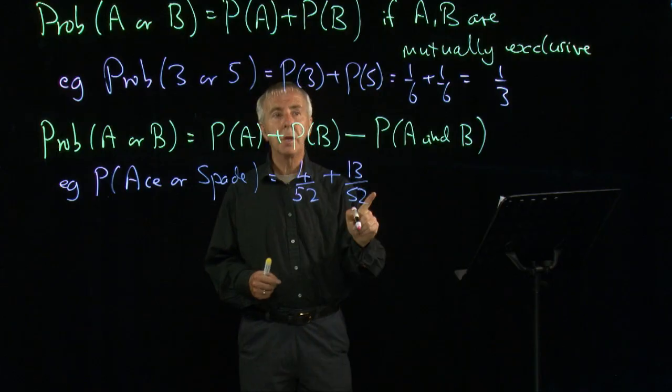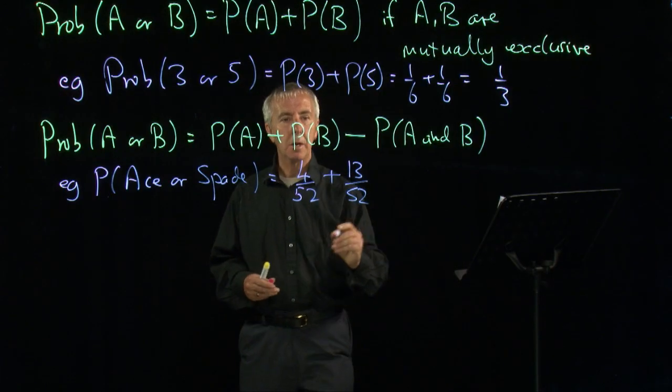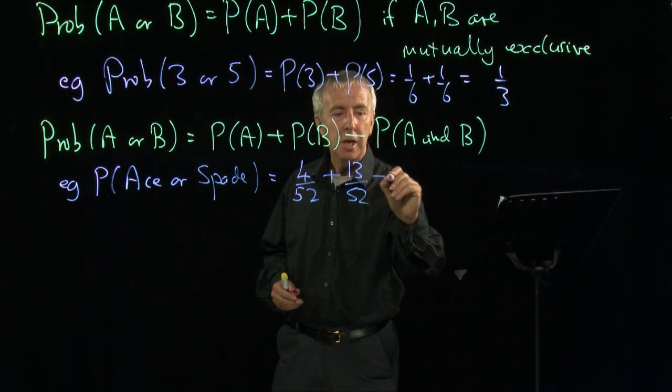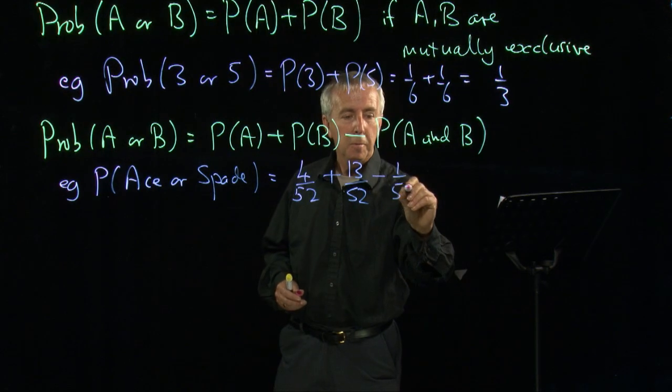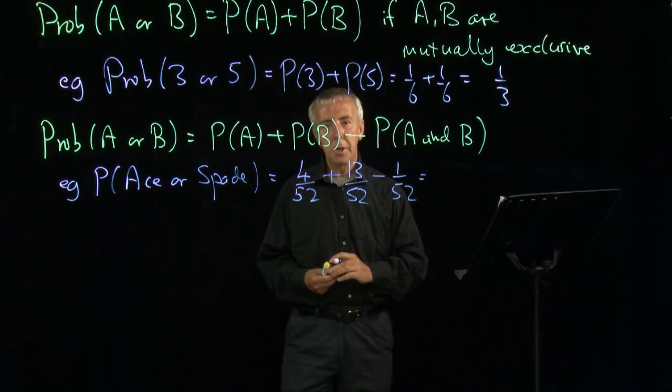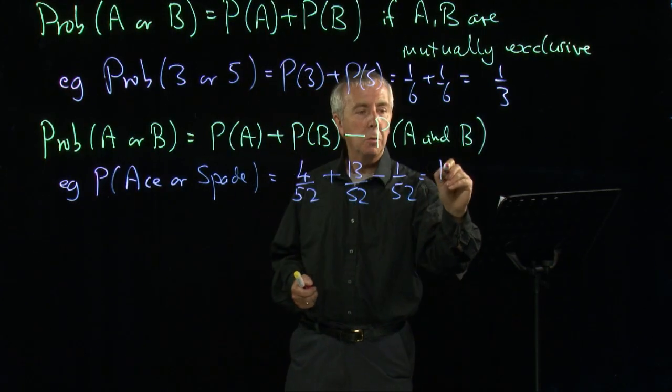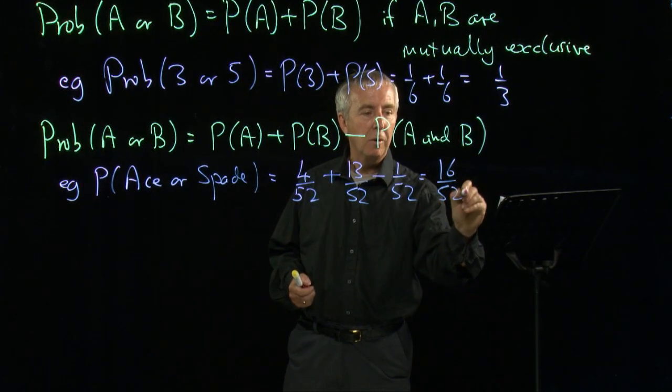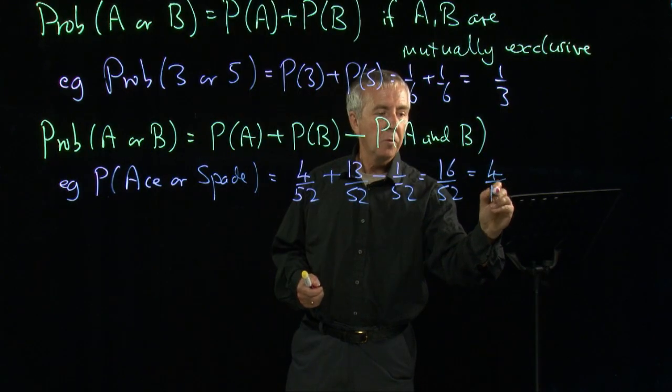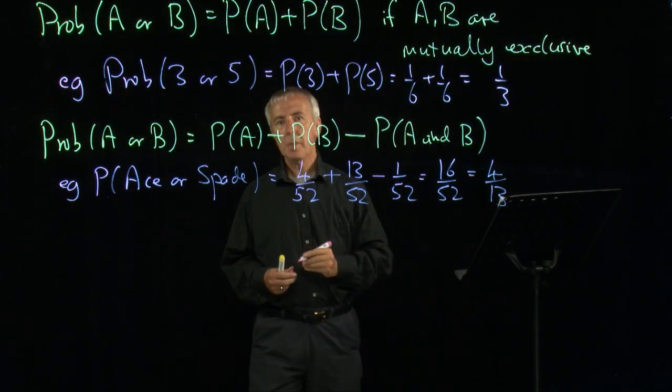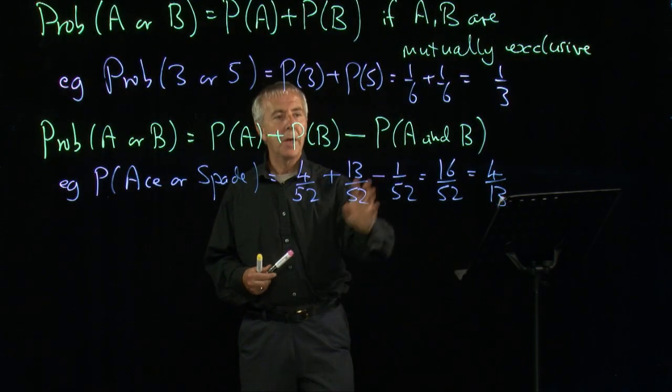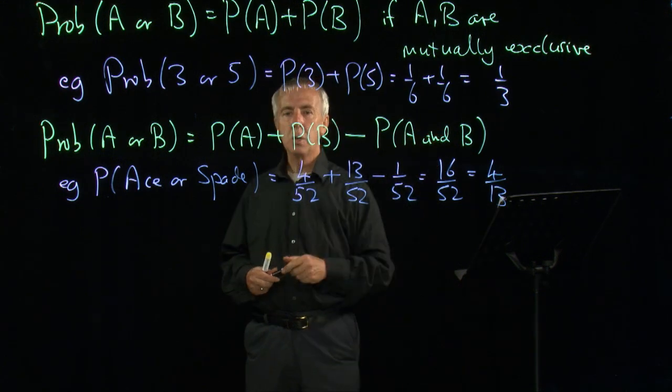And the ace and the spade is what we normally call the ace of spades, and there's one of those. There's one card that is an ace and a spade. So we need to take away the chance of getting that one card, which is 1 out of 52. And so if we add those together, 17/52, take away 1/52, we're back to 16/52, which is 4/13.